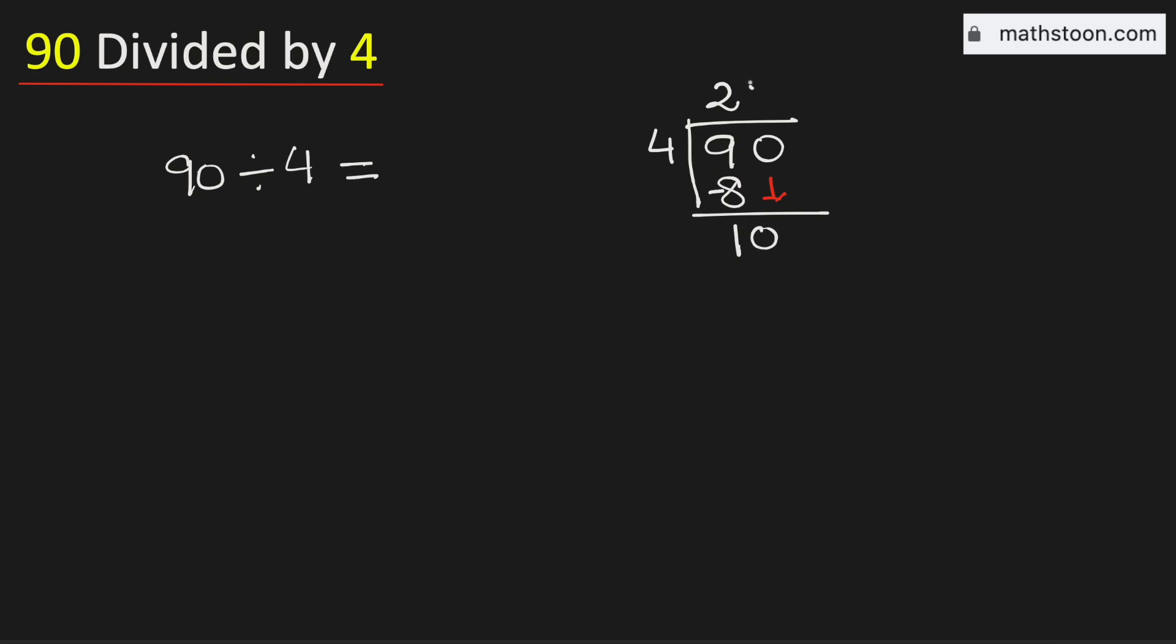Again, 4 times 2 is 8. Subtract, we get 2. Now as 2 is less than 4, in this case we will borrow 1 zero. And for that, we need to put a decimal here.